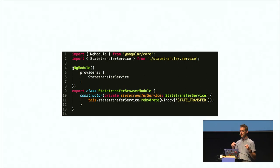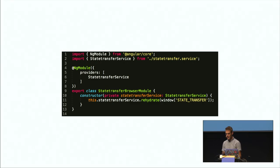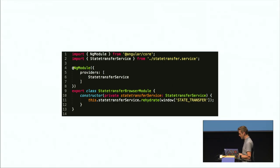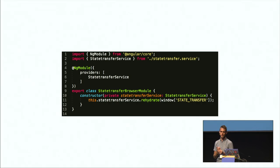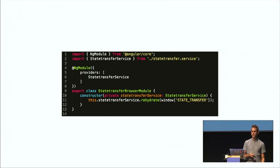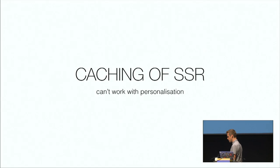Server-side rendering is really cool, though for us — a .NET house not used to running Node on the server — we wanted a solution not entirely dependent on it. If the Angular SSR server doesn't work, we can fall back to a regular response that bootstraps the application on the client. We also wanted to cache the SSR response, maybe serve it from a CDN so it's fast for everybody, and then have Angular take over from there.